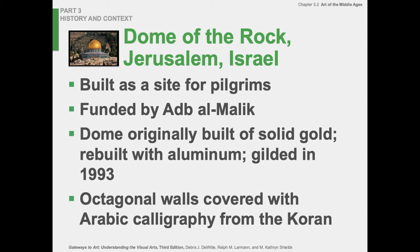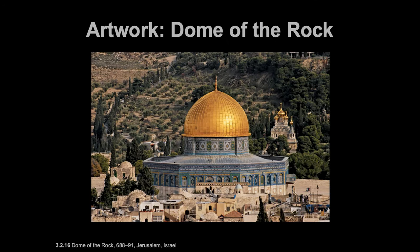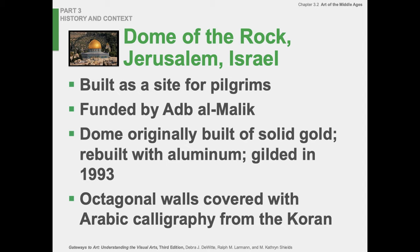The Dome of the Rock is in Jerusalem and was a site for pilgrims. The dome was originally built of solid gold, then rebuilt with aluminum and gilded in 1993. It has octagonal walls covered with Arabic calligraphy — phrases from the Quran — with beautiful script going around it. Pattern and decoration. And interestingly, right nearby you can see onion domes of what I believe is an Eastern Orthodox Christian church.